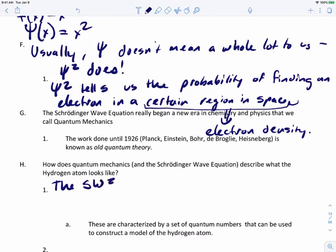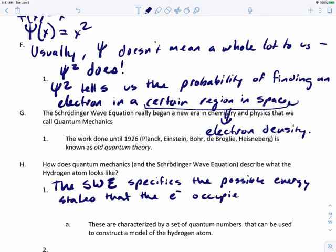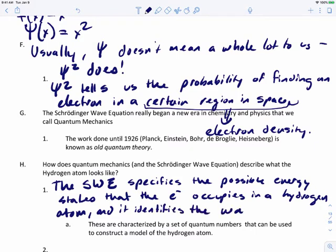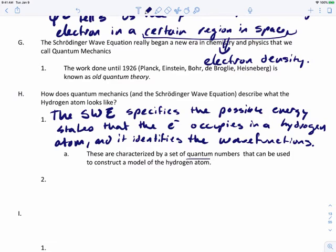The Schrödinger wave equation, which I'm going to call the SWE, specifies the possible energy states that the electron occupies in a hydrogen atom. It also identifies the corresponding wave functions. These are characterized by a set of quantum numbers that can be used to construct a model of the hydrogen atom. This quantum numbers is actually what we're going to be talking about in the next video.